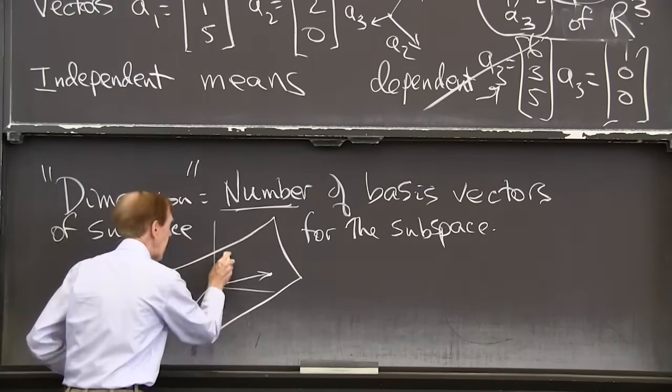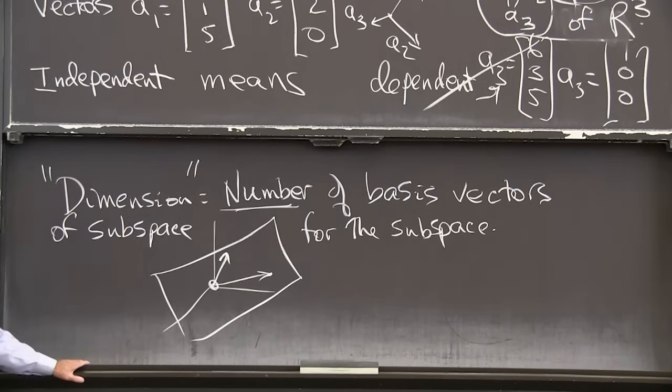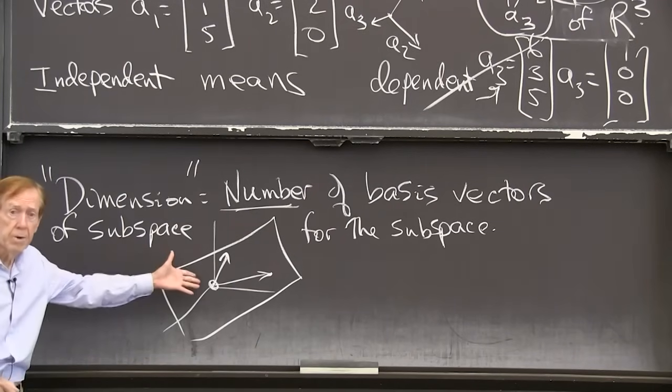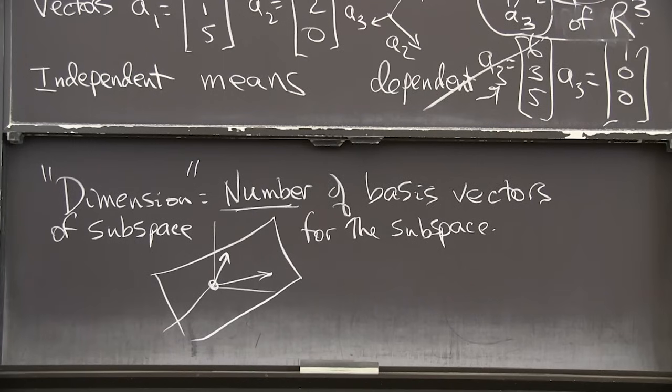And I could take another vector in the plane. And they could be independent. They are. They're different directions. But I couldn't find a third independent vector in a plane.